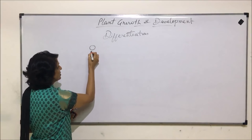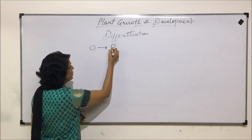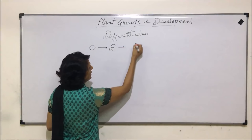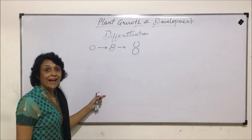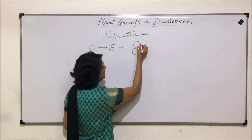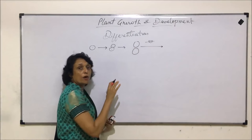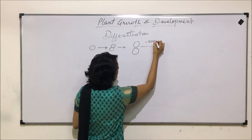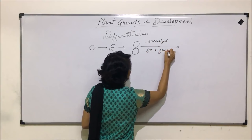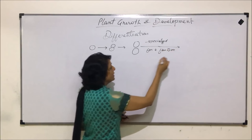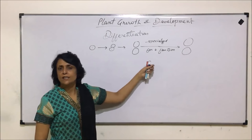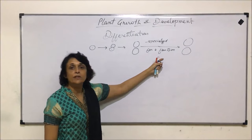Suppose this is a small cell; it undergoes mitotic division to form two daughter cells. These daughter cells will become large — they undergo enlargement, and water plays a very important role in this enlargement. Now these cells become specialized for a particular function. This process is known as differentiation. The specialized cells could become either parenchymatous cells, sclerenchymatous cells, or any kind of cells depending upon the requirement of the plant.